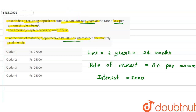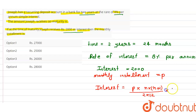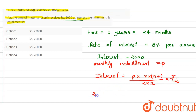For finding the monthly installment, let's suppose the monthly installment is P. The formula is: Interest = P × n(n+1) / (2 × 12) × r/100. We put the given values: interest is 2000, n is 24 months, n+1 is 25, and rate of interest is 8 percent per annum, so we put 8 upon 100.